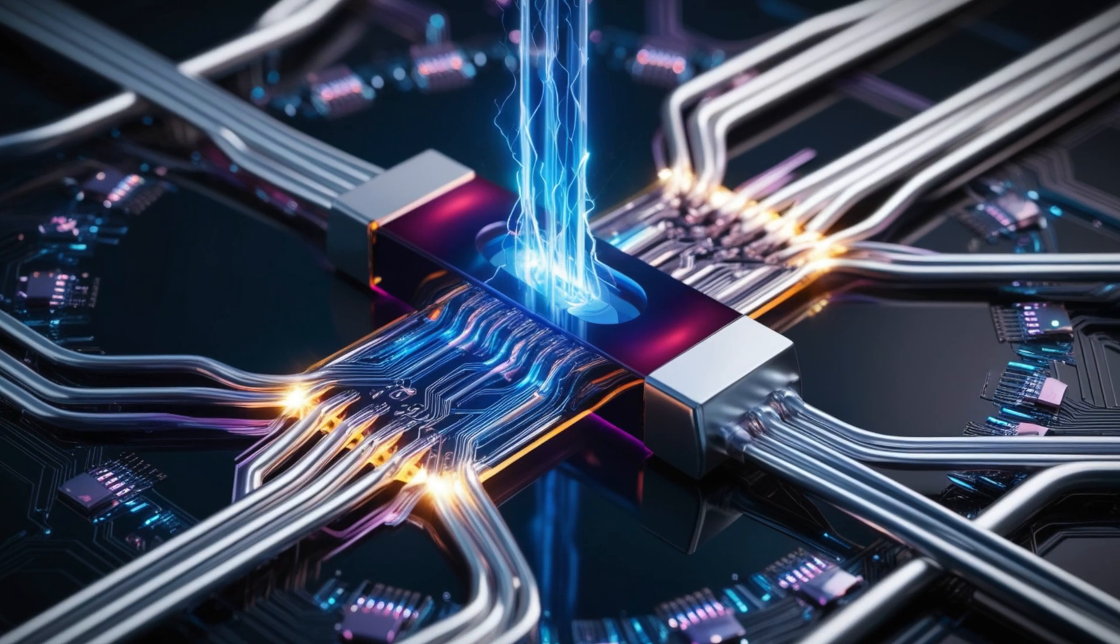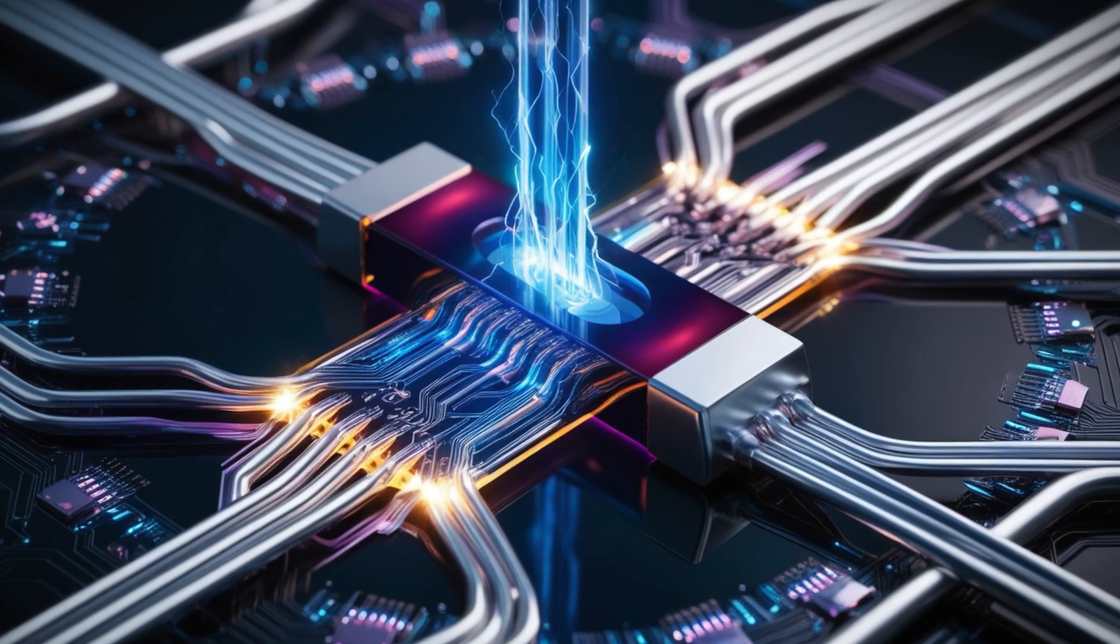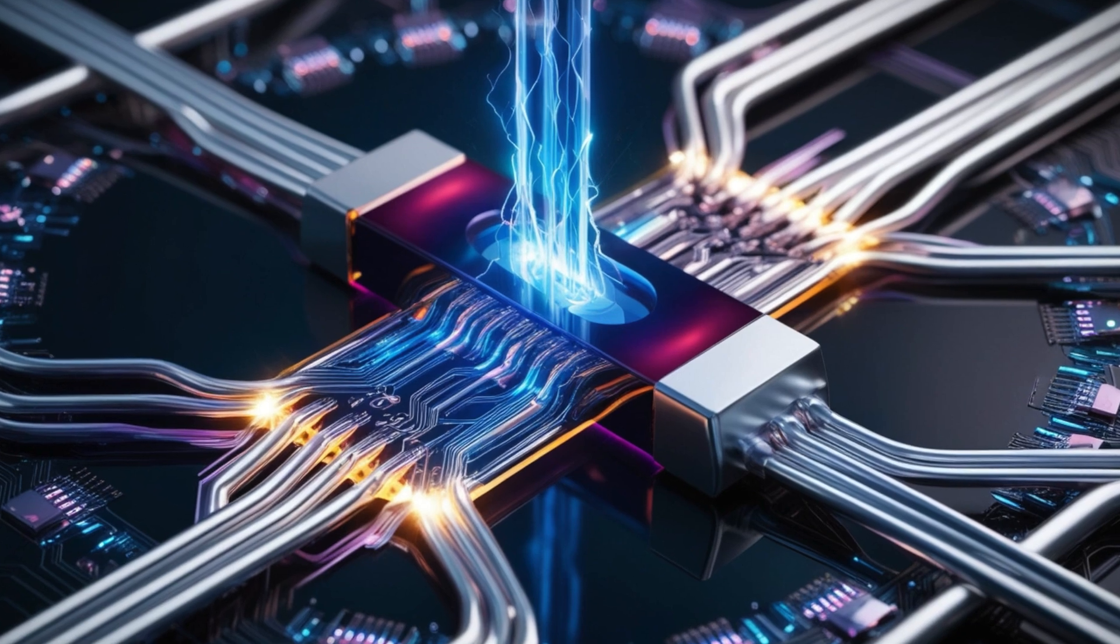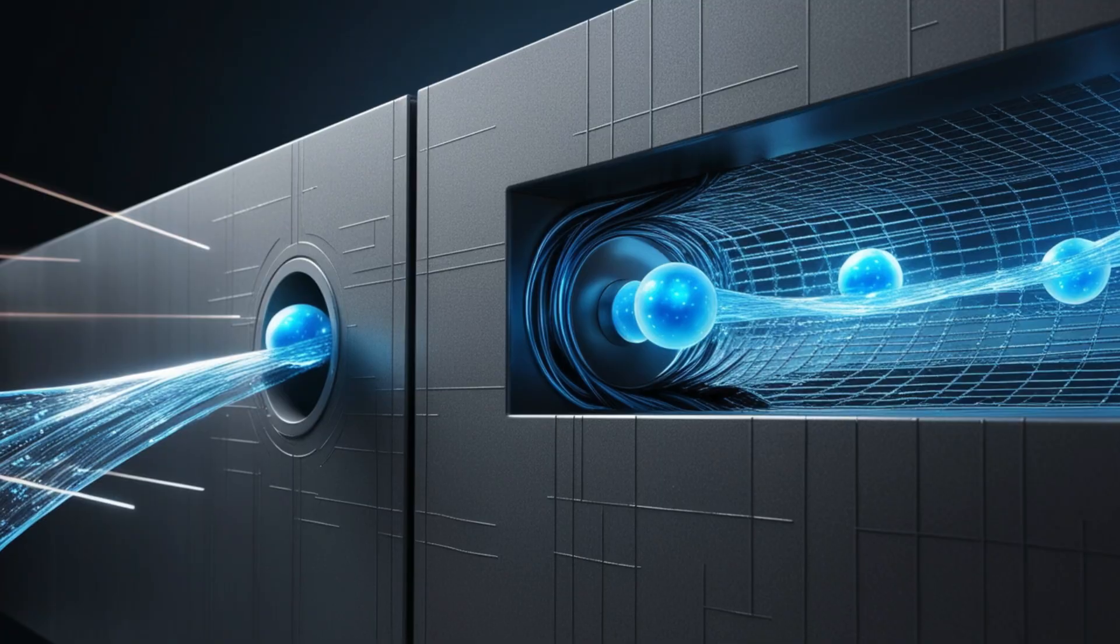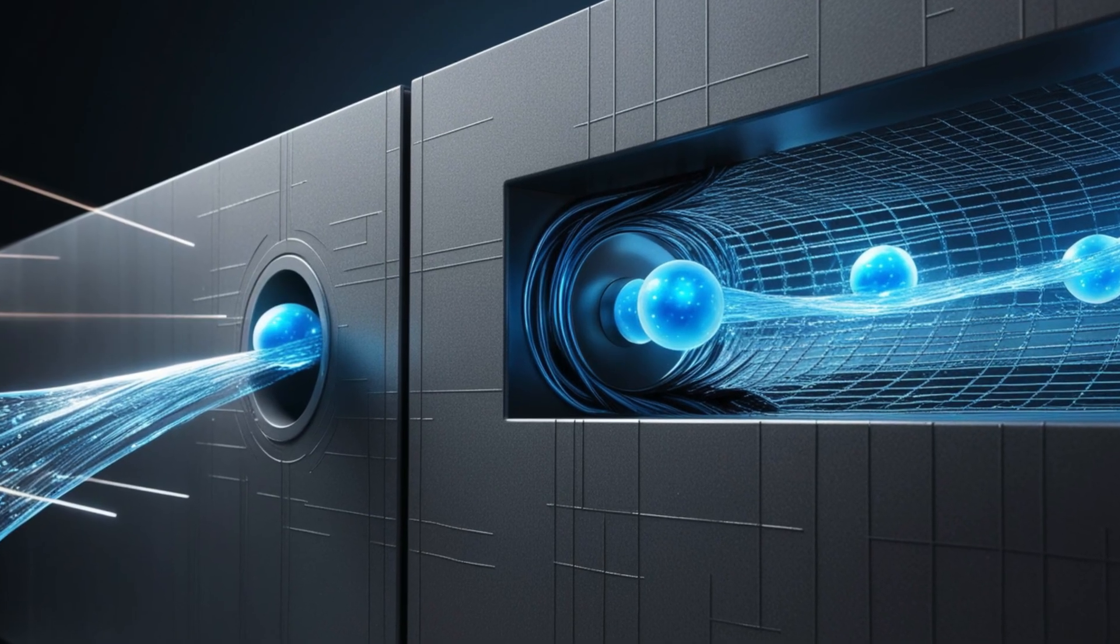Even in modern computing, as we shrink transistors down to the scale of just a few nanometers, tunneling becomes impossible to ignore. At these scales, electrons don't care about barriers the way we'd like them to.